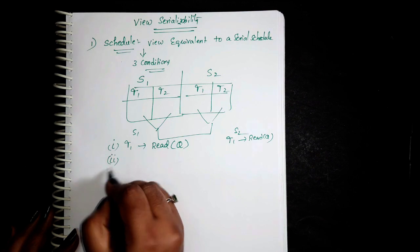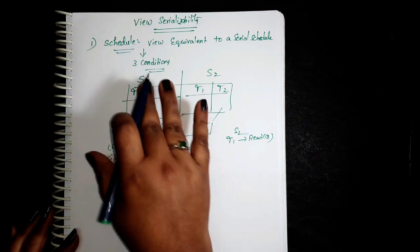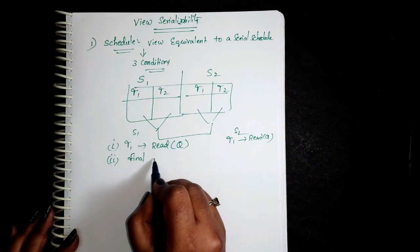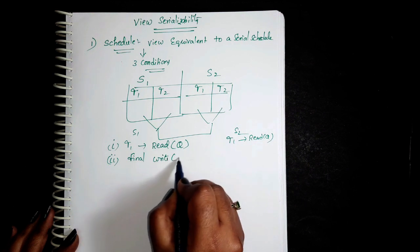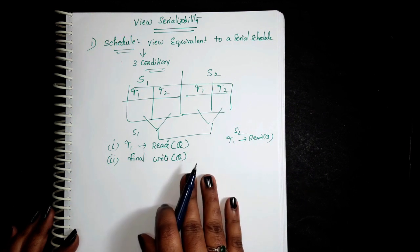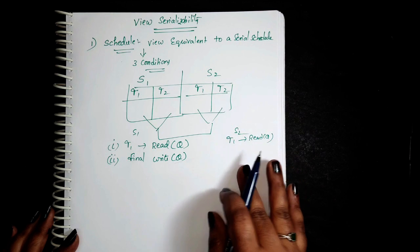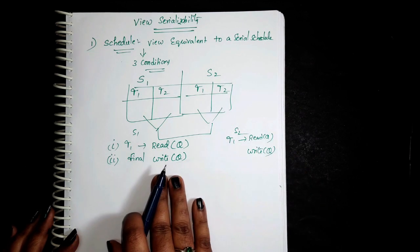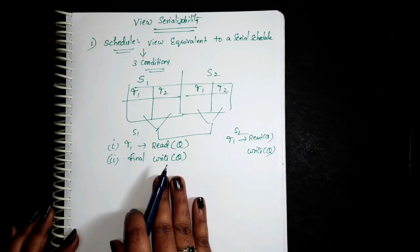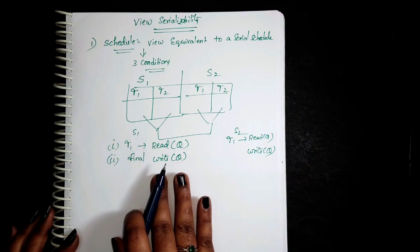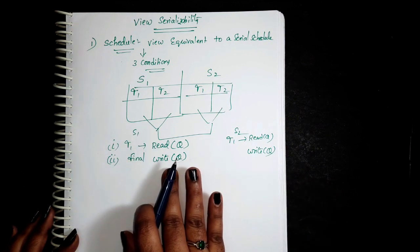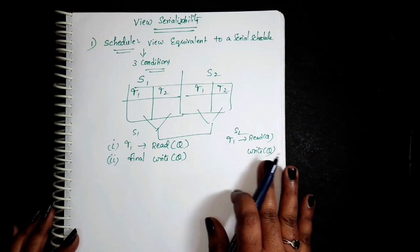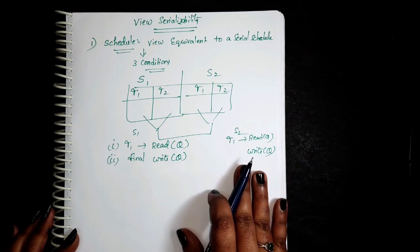Second condition: if in schedule S1, a transaction performs the final write operation on Q, then similarly in S2 also, a transaction must execute the write Q operation. If any transaction in S1 is executing the final write Q, then in S2 that transaction must also execute the final write Q.